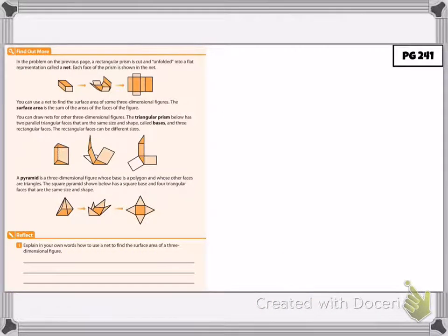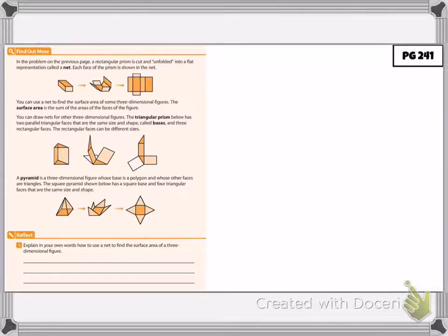A rectangular prism is cut and unfolded into a flat representation called a net. Each face of the prism is shown in the net. When we take the box and unfold it, the shape it leaves us with is the net. You can use a net to find the surface area of three-dimensional figures. The surface area is the sum of the areas of the faces of the figure.